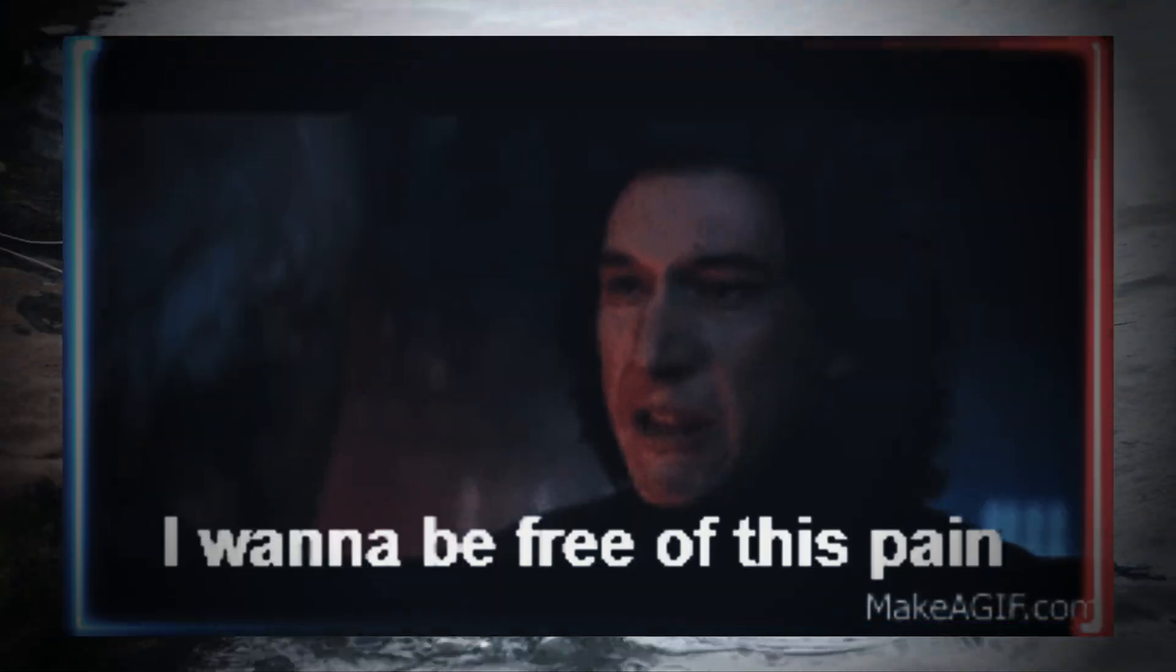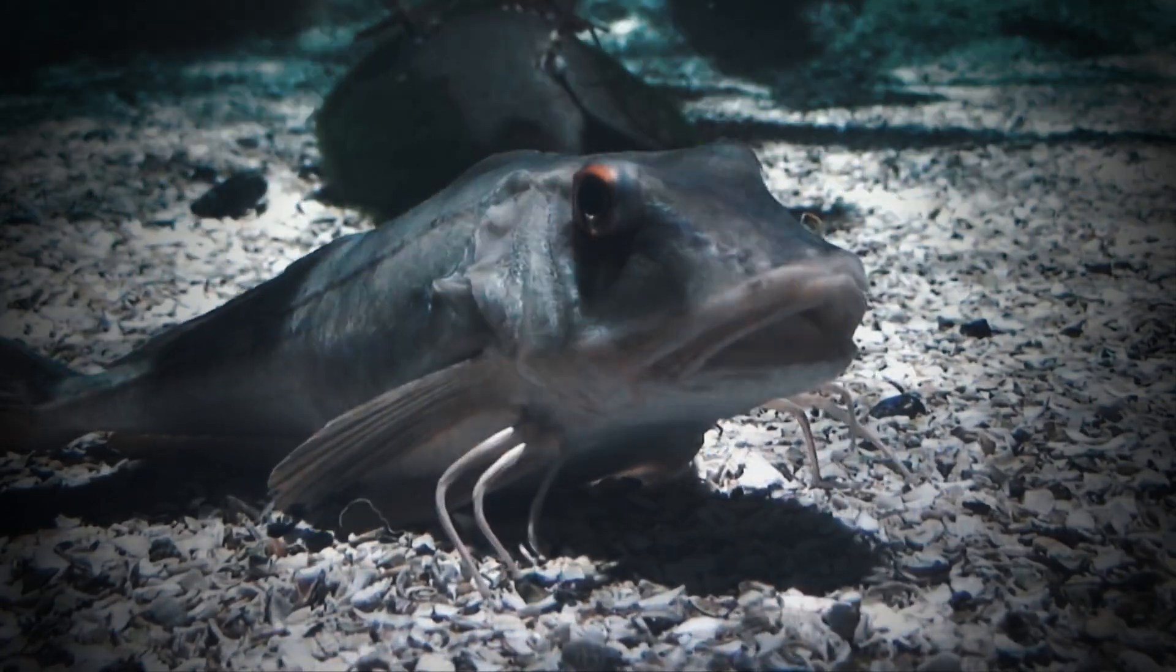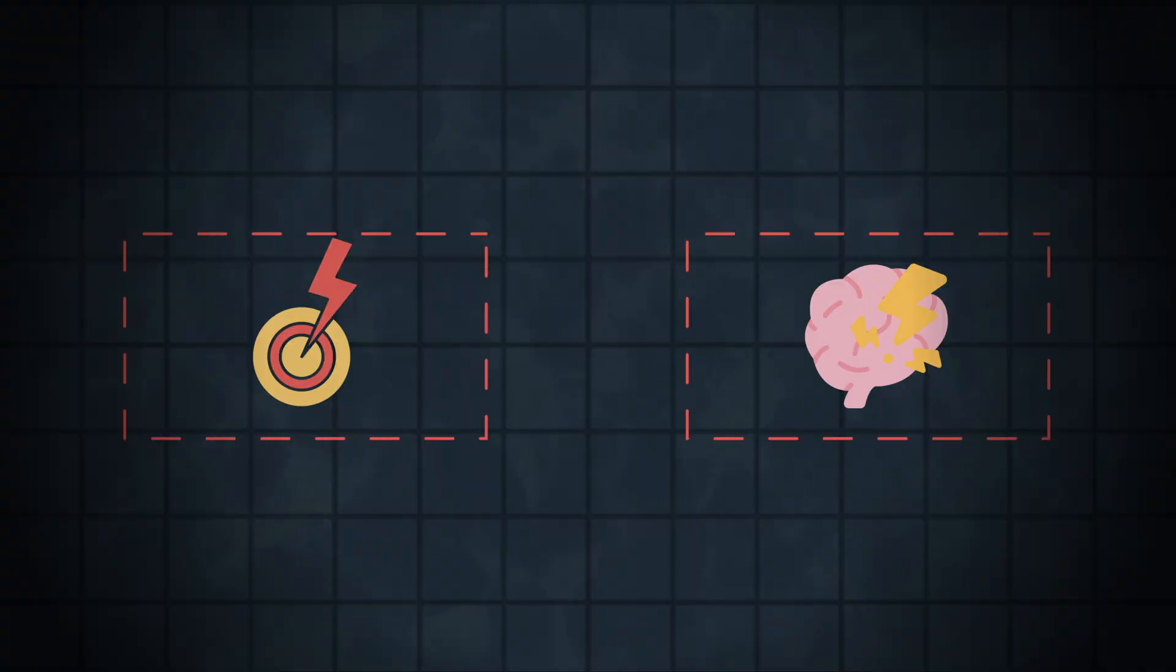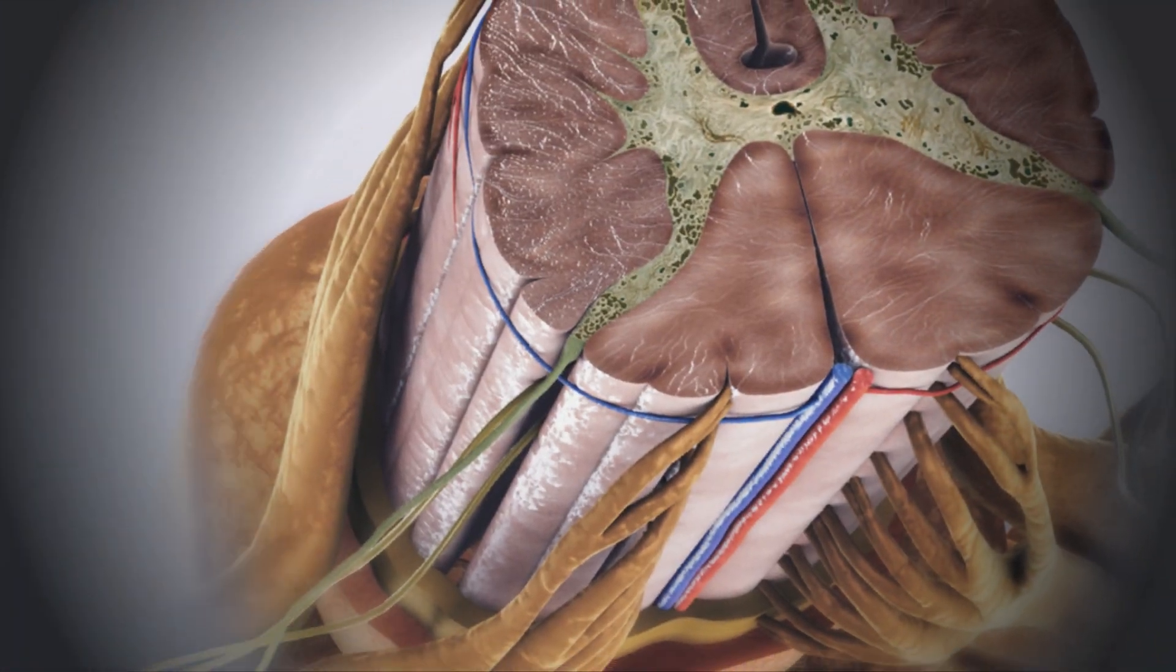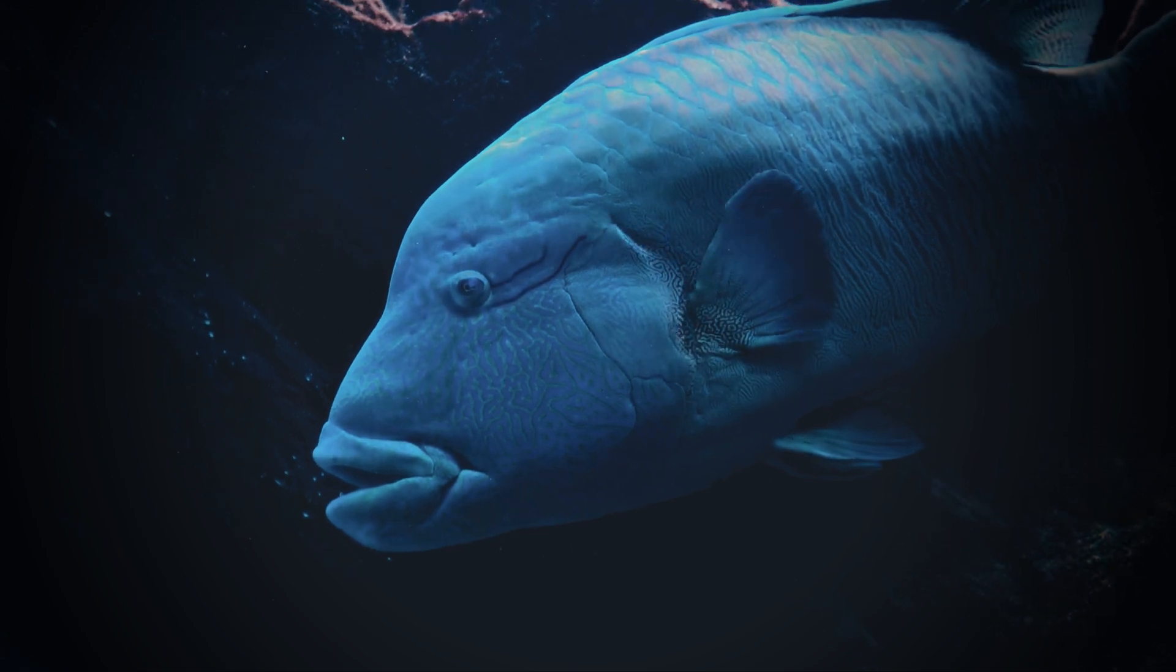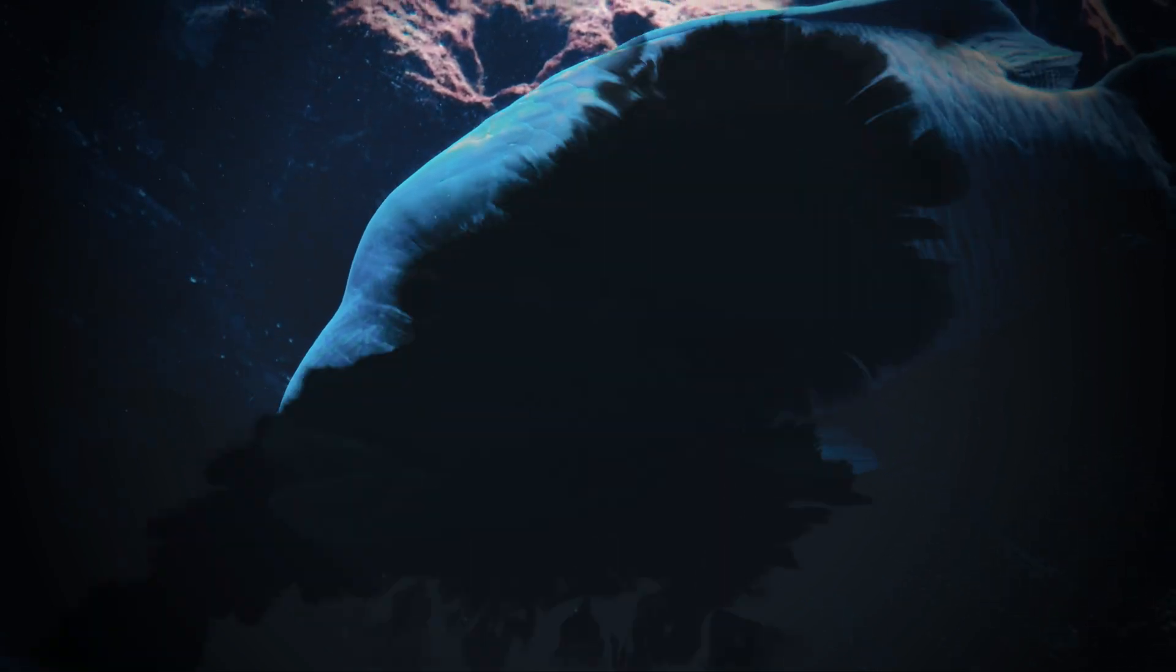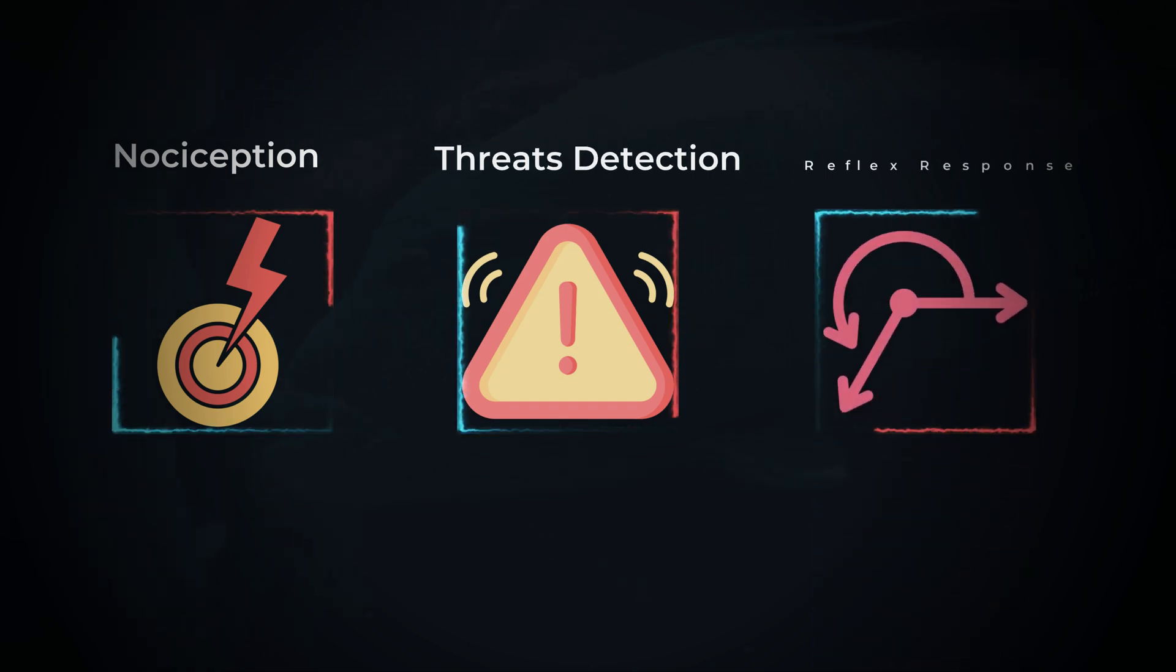First things first, what is pain? If we want to answer if fish can feel it, we first need to understand what it is. And there are two layers. First is nociception, which is the automatic body reaction to danger, like pulling your hand off a hot stove. It has already been demonstrated that fish do this. They are capable of nociception. They can detect threats and have a reflex response.